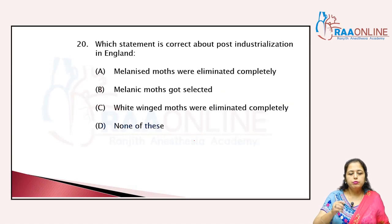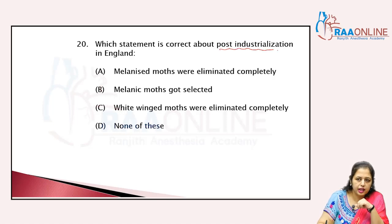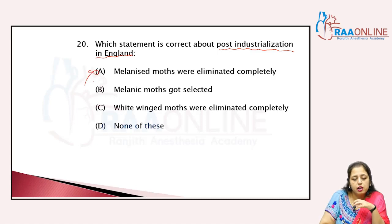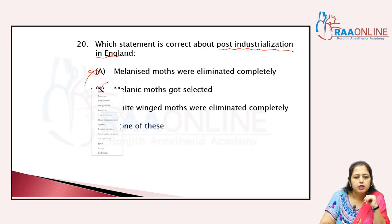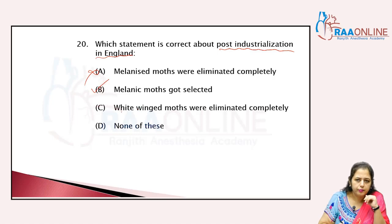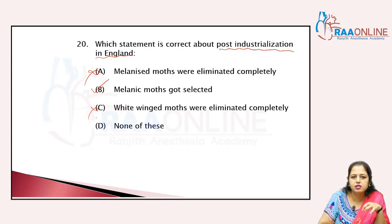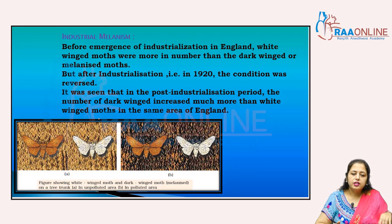Which statement is correct about post-industrialization in England? Melanized moths were not eliminated completely — they increased and got selected. White-winged moths were not eliminated completely, but their number decreased gradually compared to the pre-industrialization period. So the answer is B.